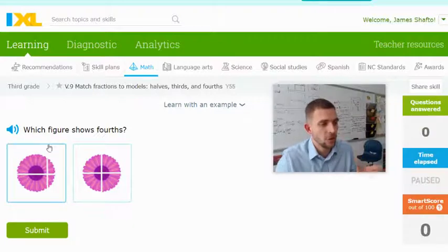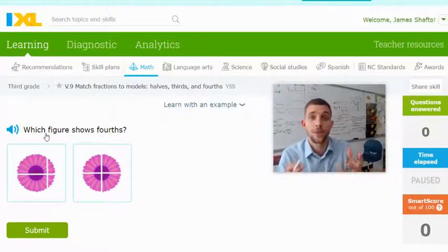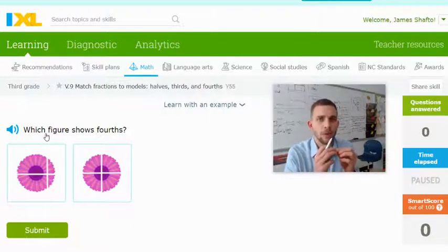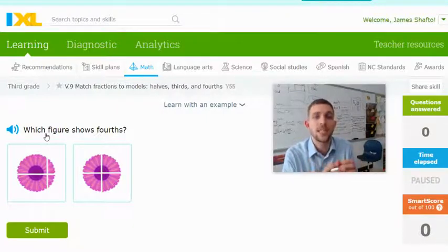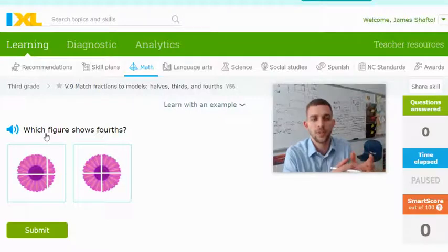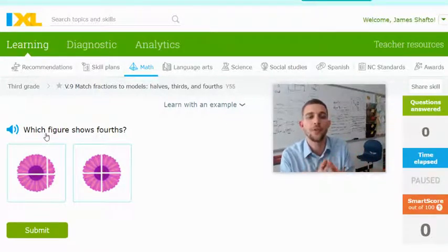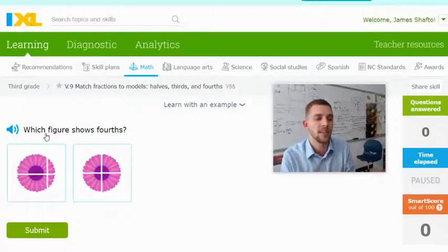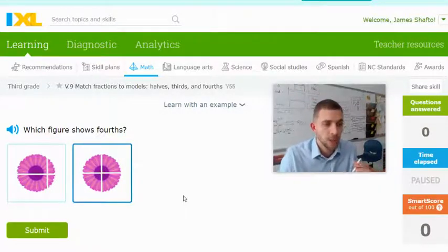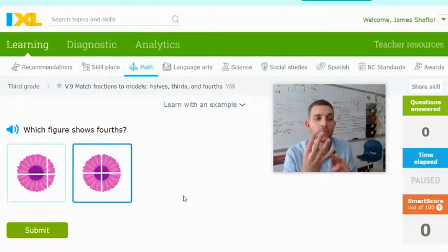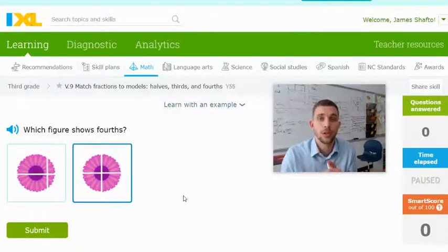on IXL, you'll notice it says which figure shows fourths. What we mean by that is when we say the word fourths, it means that we've taken a whole of something, in this case a flower, and we've cut it into four equal pieces. So the correct answer is this one, because I have four pieces, fourths, and they're cut into equal pieces.